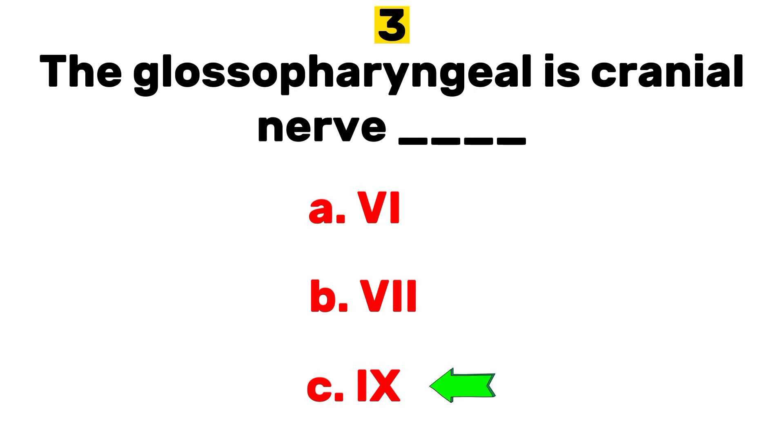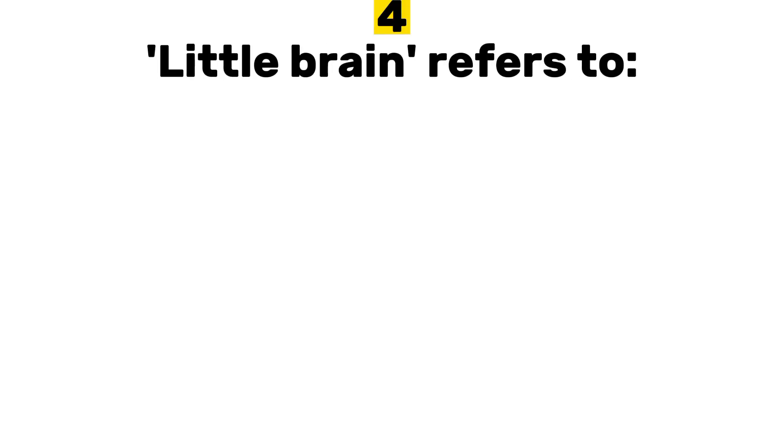Number three: the glossopharyngeal is cranial nerve dash. A) sixth, B) seventh, C) ninth. Answer: C) ninth.